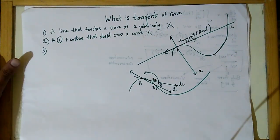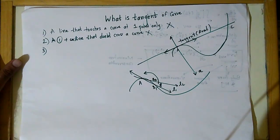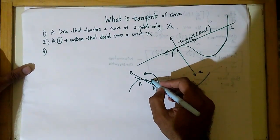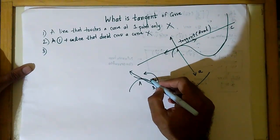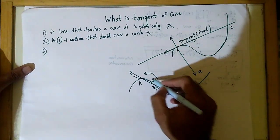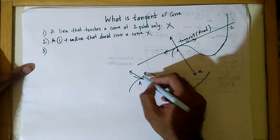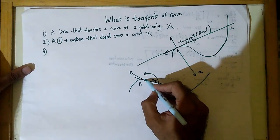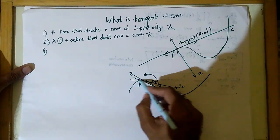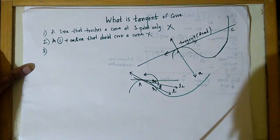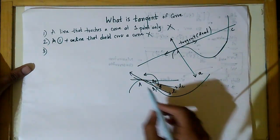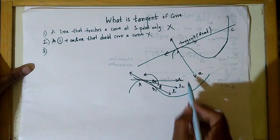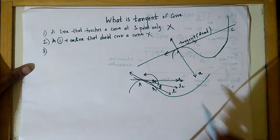I draw a new line — is this a tangent? No. Again I move point B, now called B2, even closer to A. So I get another line — this is also not a tangent, this is L3.